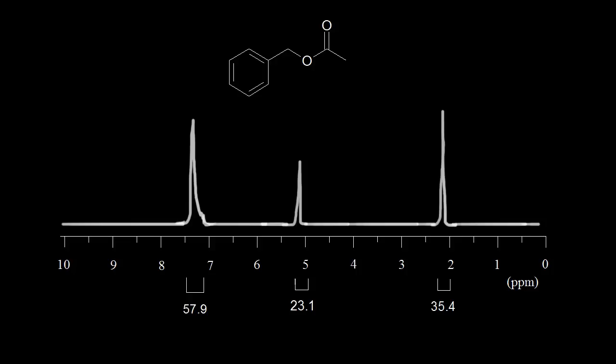The computer calculates the area under the signal. For example, for this signal, the area under the signal is calculated by the computer and gives us this number. The computer gives us 57.9. For this signal, the computer gives us 23.1, and finally, for this signal, we get an integration value of 35.4.